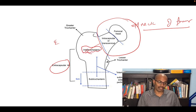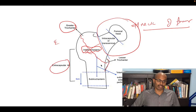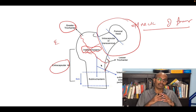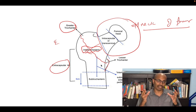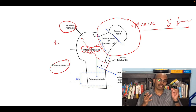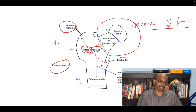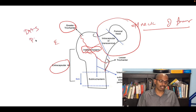What is the intertrochanteric region? We have a lesser trochanter and a greater trochanter. A fracture extending between the lesser trochanter and greater trochanter is called an intertrochanteric fracture. Intracapsular fractures in older patients have to be replaced, whereas extracapsular fractures have to be fixed with a DHS or dynamic hip screw, or a PFN — proximal femoral nail.